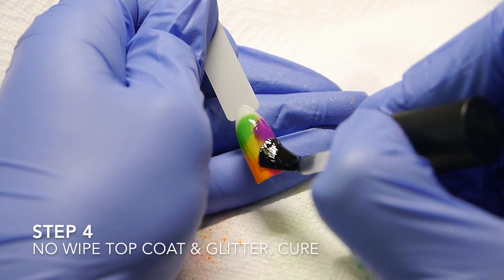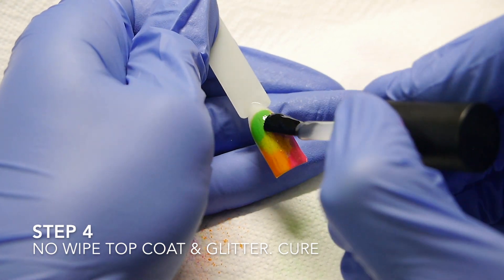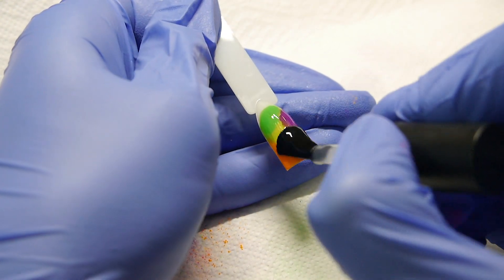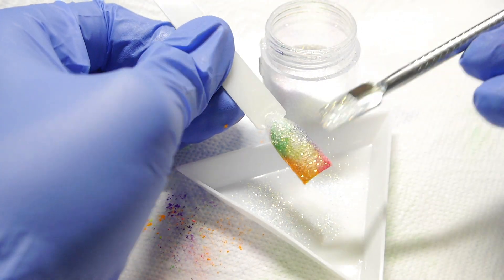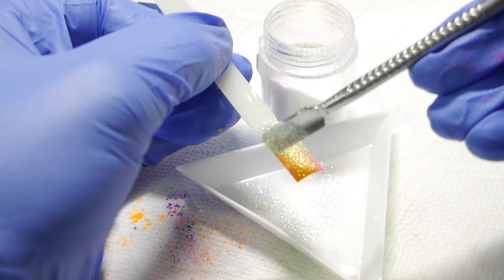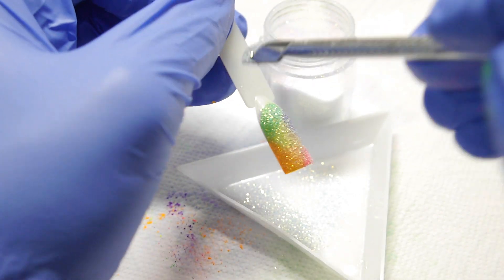Over my cured top coat I'm applying a layer of no wipe top coat and before curing I'm sprinkling fine iridescent glitter into the wet polish to create the sugared effect and curing for the usual top coat time.